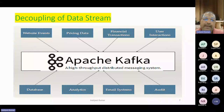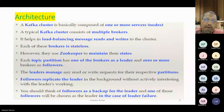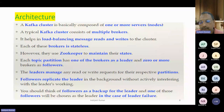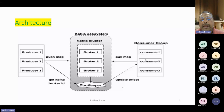Coming back to architecture — in learning any technology, we have to learn, unlearn, and relearn. How Kafka came to be, how nodes, brokers, and ZooKeeper come into the picture. Producers push messages to the Kafka ecosystem. To manage Kafka, there is a ZooKeeper ecosystem. It manages the broker IDs. There is also the consumer — consumers create a group. Producers produce the message and consumers pull the message.